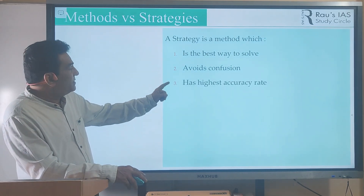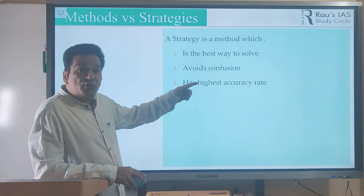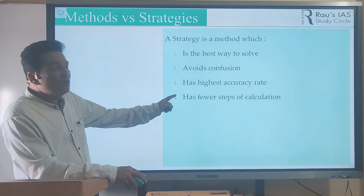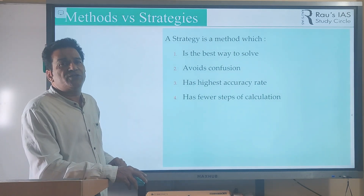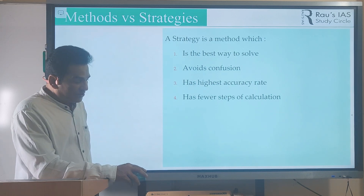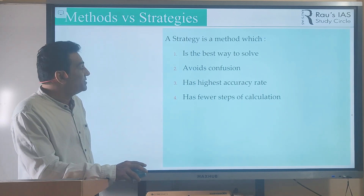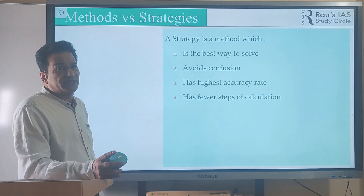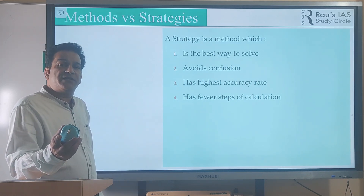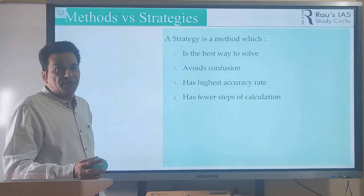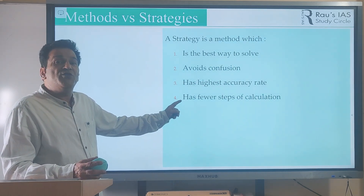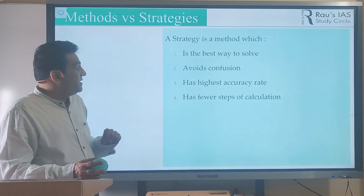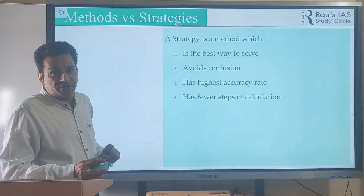A strategy is a method which has the highest accuracy rate, and you have to choose a strategy — or your teacher has to help you with that. It has fewer steps of calculation. Why is fewer steps of calculation really important? Because every step of calculation is an invitation for you to make a silly mistake. You have a chance of making a silly mistake at every step. So if there are fewer steps in your strategy, you are automatically going to have a greater amount of accuracy.